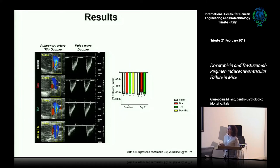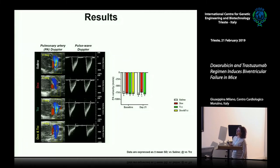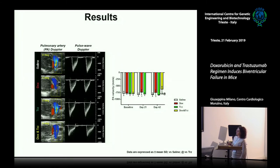Another parameter to measure right ventricle function is pulmonary artery pulse wave Doppler. Doxorubicine-Trastuzumab treatment induced a significant decrease in pulmonary artery peak velocity at day 21, which remained similarly decreased at day 42, with a significant decrease observed specifically in the Doxorubicine-Trastuzumab group.